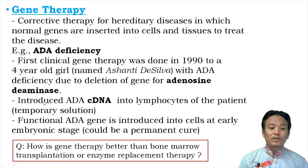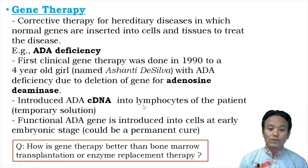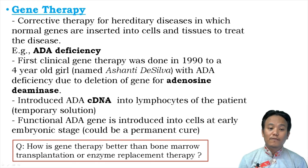In her treatment, doctors introduced ADA cDNA into the lymphocytes of Ashanti De Silva. After introducing the ADA cDNA into her lymphocytes, those lymphocytes were injected back into the patient, allowing them to produce adenosine deaminase. However, this was a temporary solution because lymphocytes have a lifespan of around two months, so she had to repeat the process. In future, if the disease is diagnosed early in embryonic stages, a functional ADA gene could be introduced at that stage for a permanent cure.